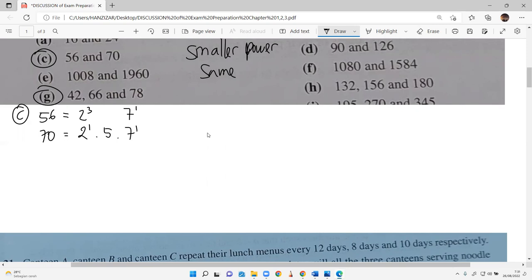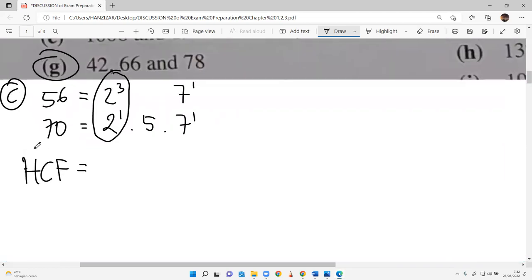70 is 2 times 35, times 5 times 7. So 2 power 1 times 5 times 7 power 1. If we have no power written, it's 2 power 1. After we are done, find the HCF. Remember, HCF is same and low, lower power. Take 2, 5 no because it has no 5 on top. 7, take 1, the smallest. So answer will be 14.